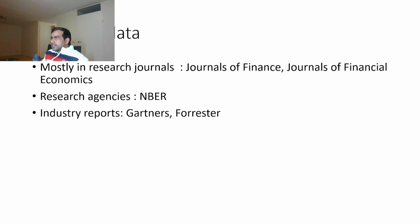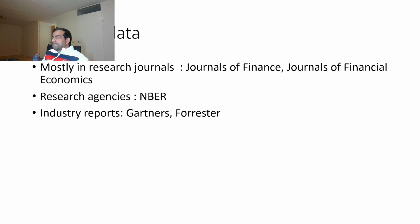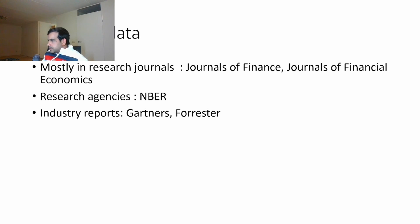Research data has been in use for a very long time. Most top quantitative firms use academic research data from journals such as the Journal of Finance, Journal of Financial Economics, and Econometrica. They also use working papers from national research organizations such as the NBER in the US. There are also industry partners such as Gartner and Forrester that do industry-specific research — for example, Gartner does research on the tech industry, and their reports are also used by companies.